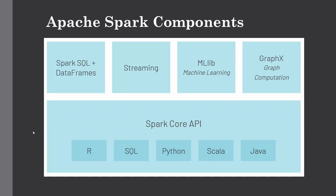Now let's talk about the Apache Spark components. At its core it has the Spark Core API, which is the kernel of Spark and provides an execution platform for all Spark applications. Whatever Spark code you run will go through the Spark Core API, where you create a Spark context or Spark session. You can write your code in any language — Java, Scala, Python, SQL, or R. It is essentially a generalized platform to support a wide array of applications.